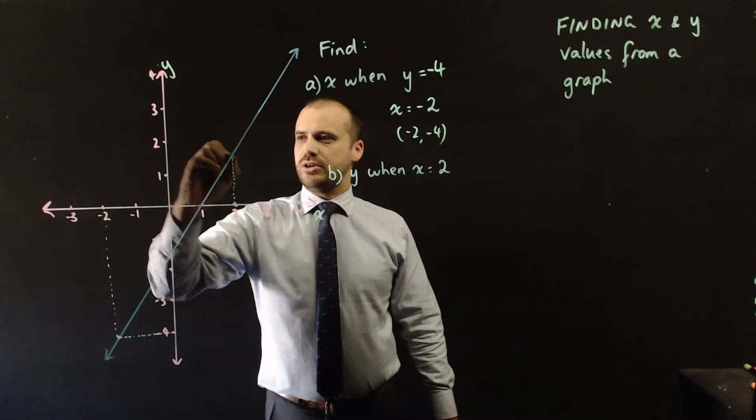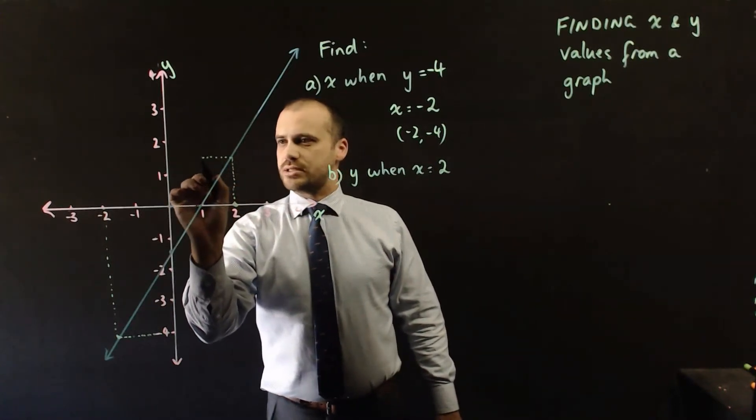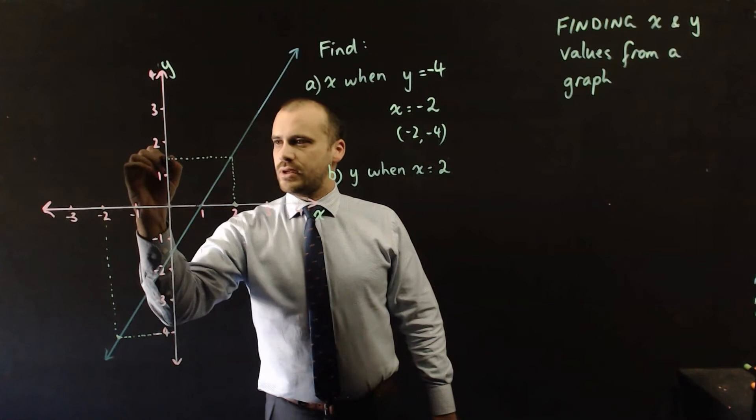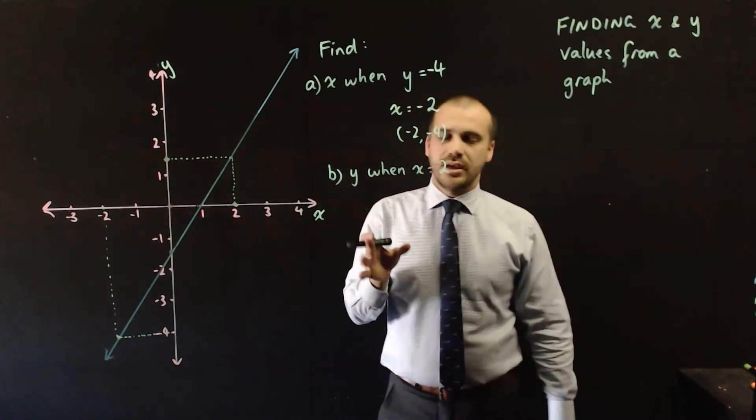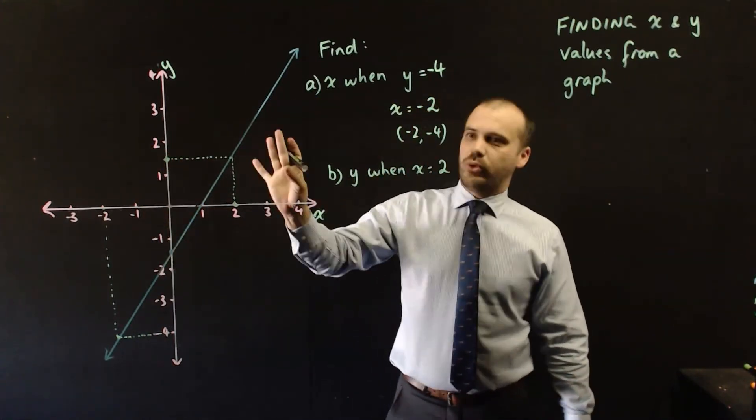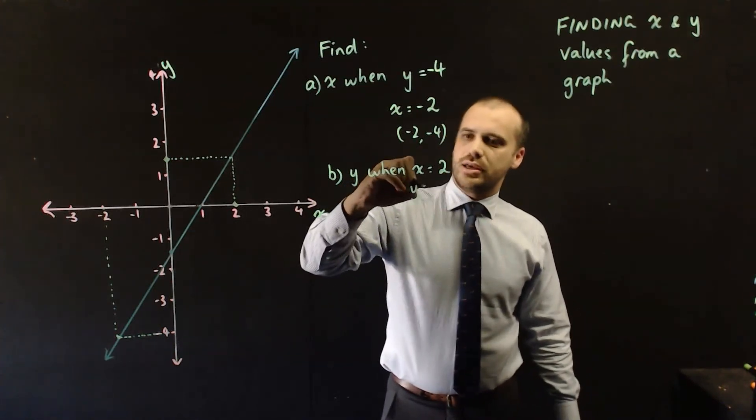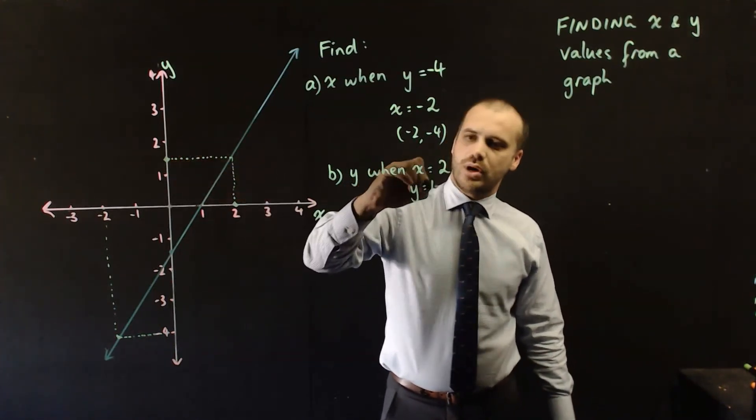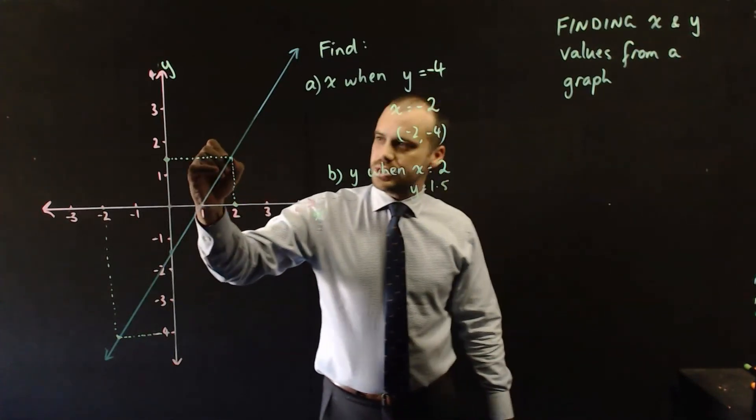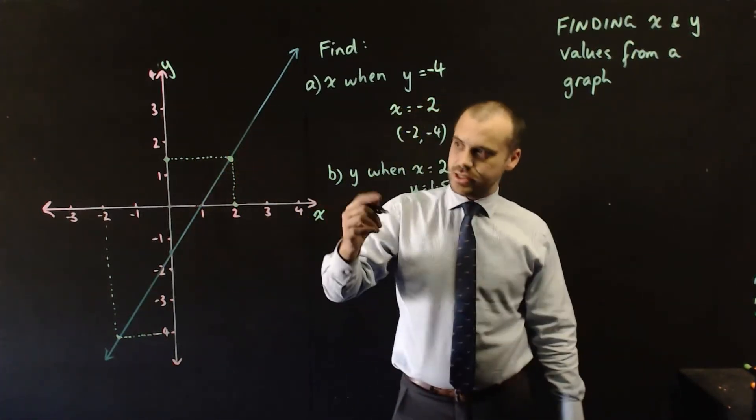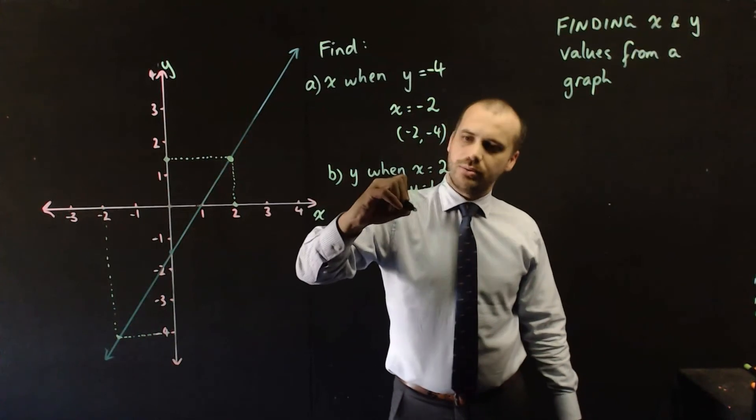That should be a straight line. And straight across to our y axis here. And you can see I'm right in the middle there. And that is 1.5. So y when x equals 2, y equals positive 1.5. Which means that this point on our linear graph is 2, 1.5.